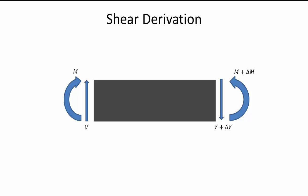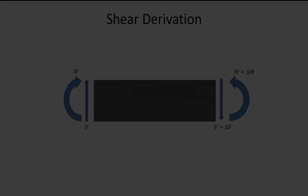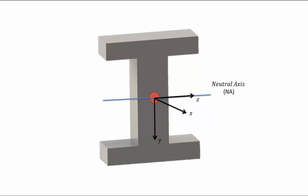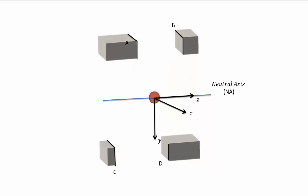We can use an equilibrium condition to solve for what shear stress is, and discover an equation we can use to solve for shear stress in the future. Here we have our cross section from making a cut along the beam, with axes x, y, and z placed at the centroid along the neutral axis. We're going to be looking at cuts A, B, C, and D, and solving for a formula for shear stress tau at each one of these cuts.